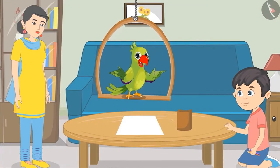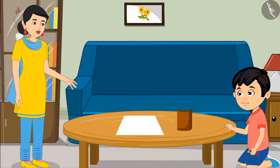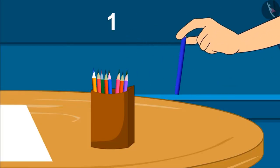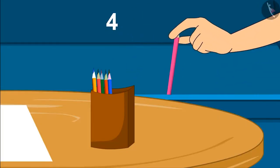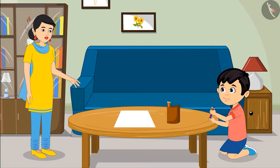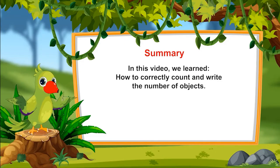Chotu takes all the pencils. The mother asks if he has taken six pencils or more or less than six. She corrects him: 'Hey Chotu, you have taken all the pencils. You have to take only six pencils.' Chotu counts: 'One, two, three, four, five, and six. Is it okay now mom?' The mother replies: 'Yes son, very good! Now you make the drawing.'